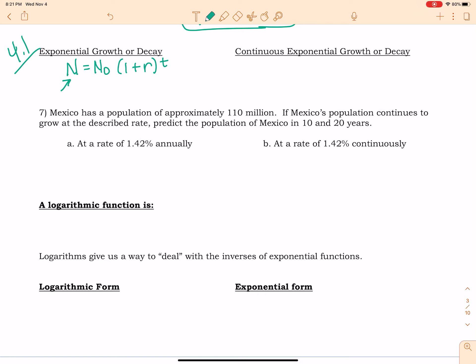This N right here represents your final amount. This is your initial amount. The R of course is going to stand for the rate, and T will be time.